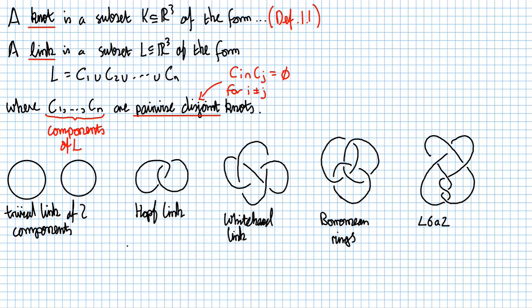Now how many components do these links have? Well, let's look at the Whitehead Link, just as an example. It's got two components, here's one of them, here's the other.